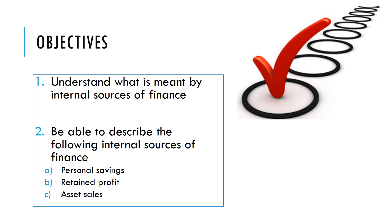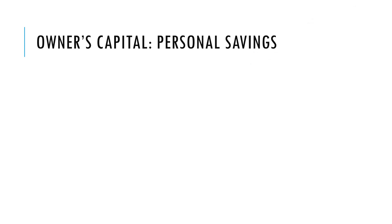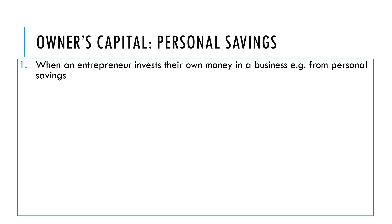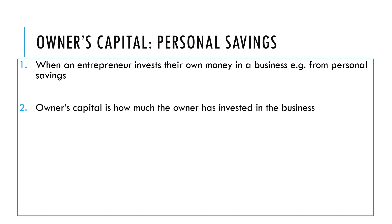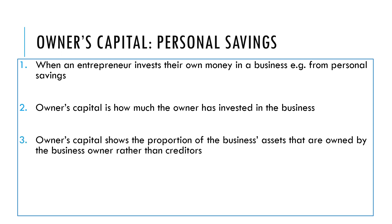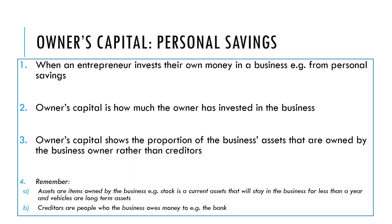The first type is owner's capital or personal sources, and that's when an entrepreneur invests their own money in a business. Owner's capital is how much the owner has invested in the business — it shows us the proportion of the assets that are owned by the business owner rather than paid for by an external source. Assets are items owned by the business and creditors are people who have lent the business money.